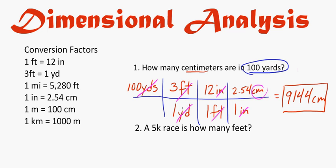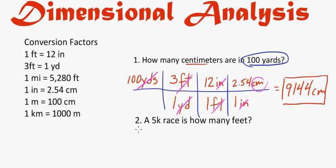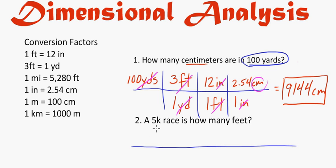So we've converted all the way from yards to centimeters. Let's do one more example. In this case, a 5k race is how many feet. When you hear "5k," that's 5 kilometers, and we want to figure out how many feet that equals. I don't have a direct conversion on my conversion factor table, so I'll have to do this in a couple steps. I'll set up a grid and start with the information I'm given: 5 kilometers.